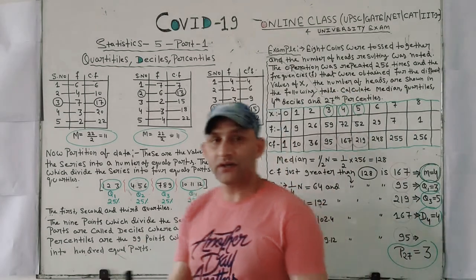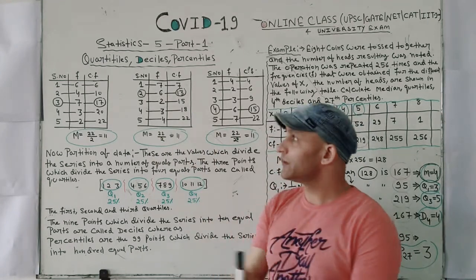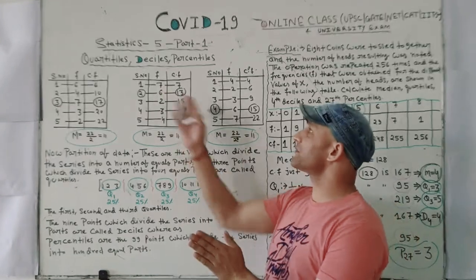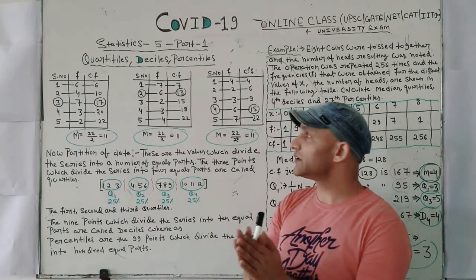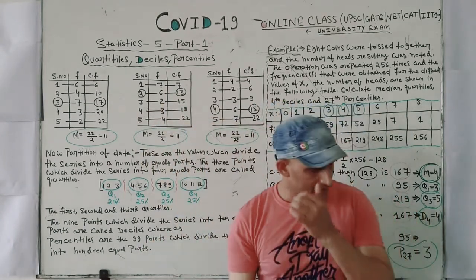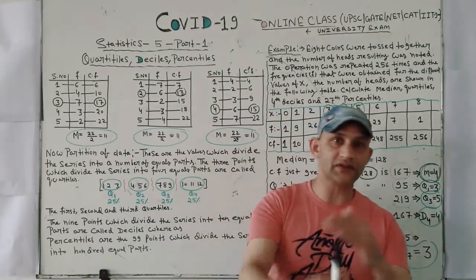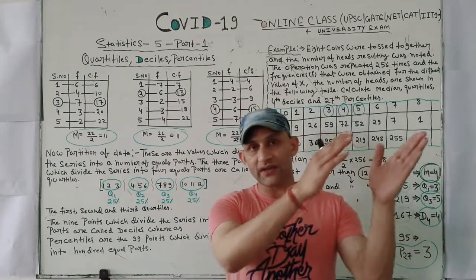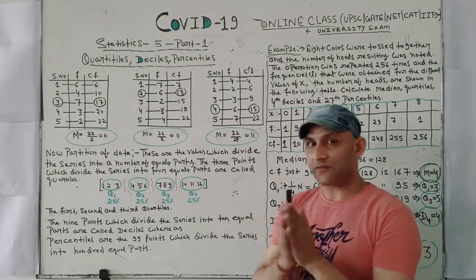Hi friends, this is lecture number 5, Statistics Part 1. Today we will discuss quartiles, deciles, and percentiles — what is the difference between these, and why scientists use such terms in statistics. Before starting this lecture, I request everyone to go through the previous lecture, as all the lectures are linked together.